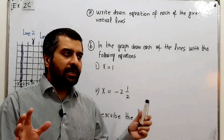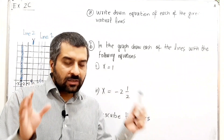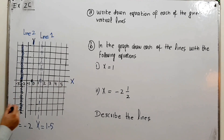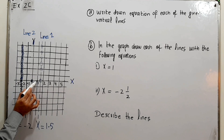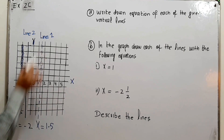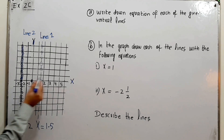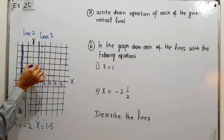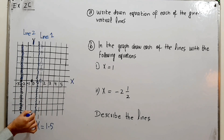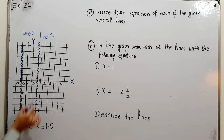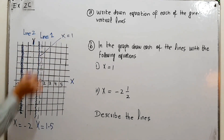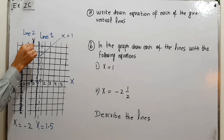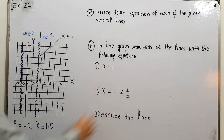Part B asks us to draw each of the lines with the following equations. For x = 1, go on your x-axis and locate where x is 1. Pass a vertical line through this value of x and you will get the required line. I'm drawing it with a slight zigzag to make the difference clear — this line is x = 1.